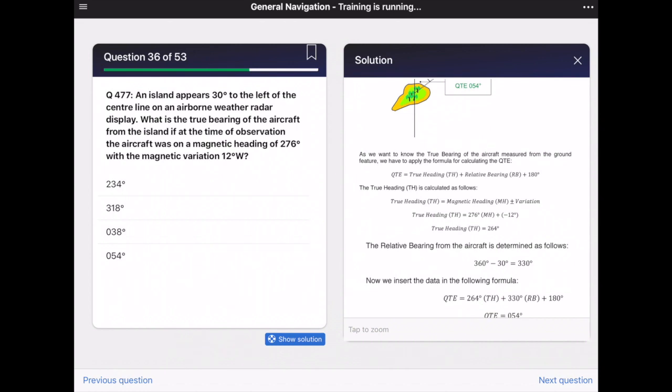So in the next step we insert the values. We have the magnetic heading of 276 and variation minus because of west. Subtracting it from 276 gives us a true heading of 264 degrees.